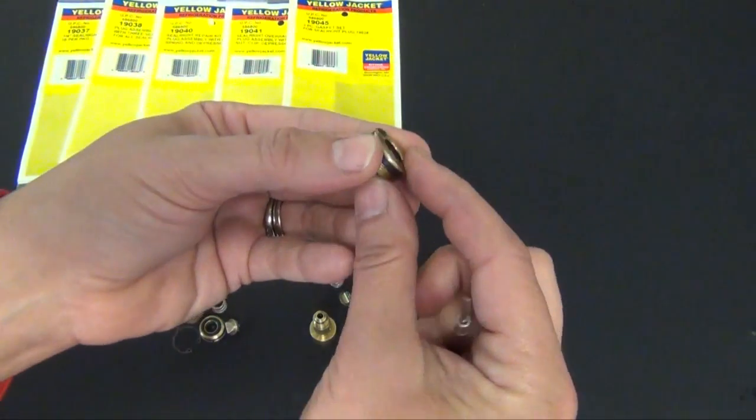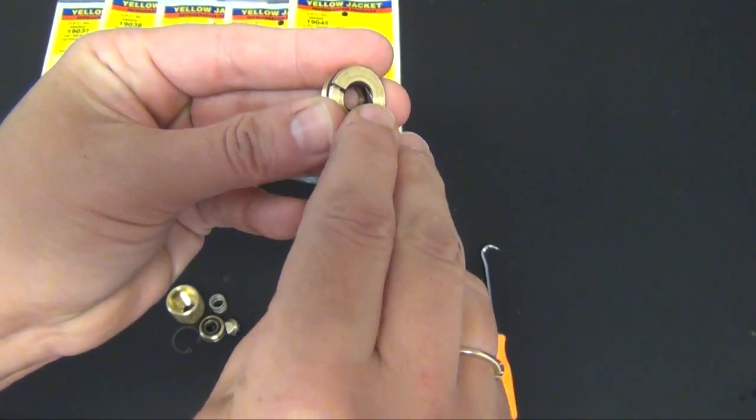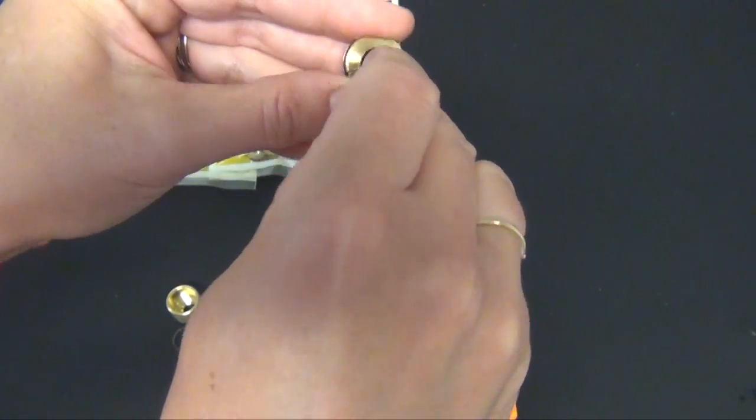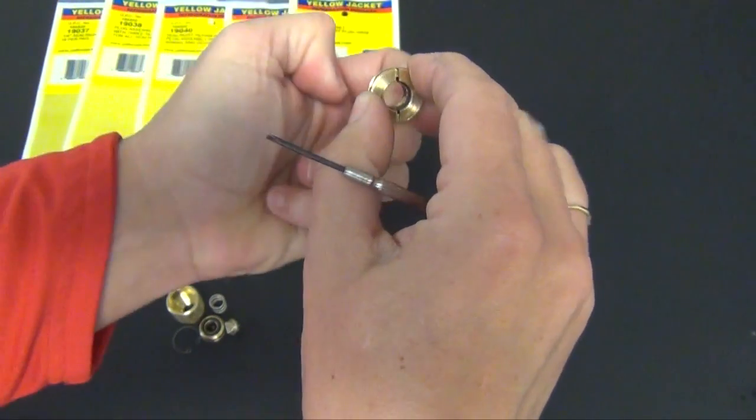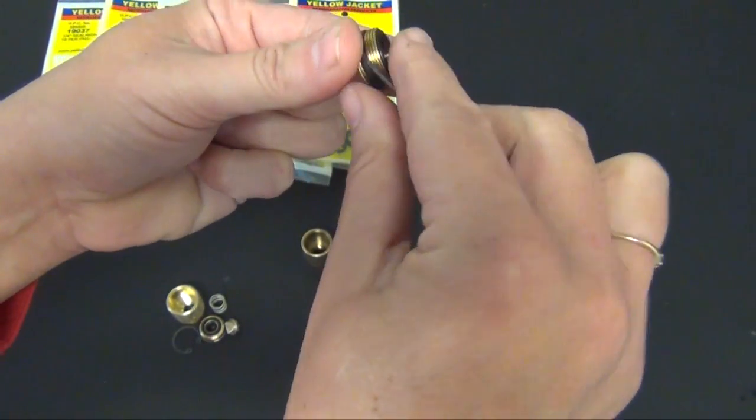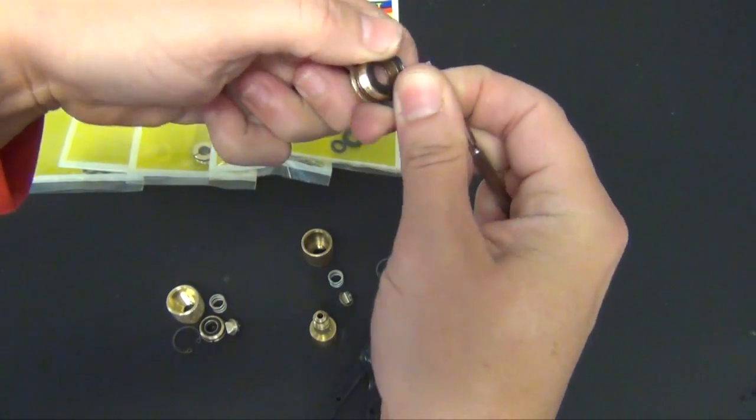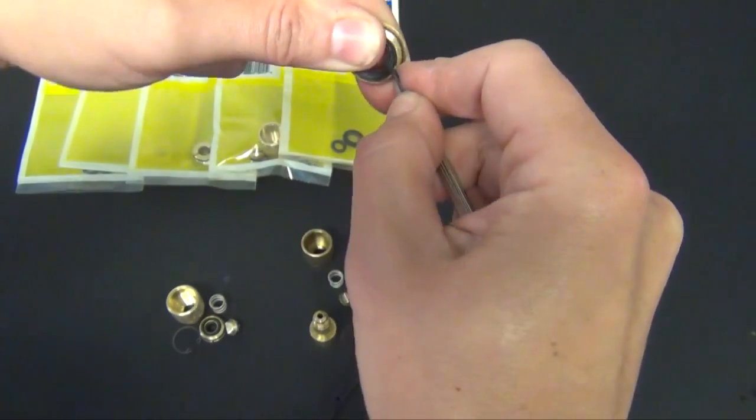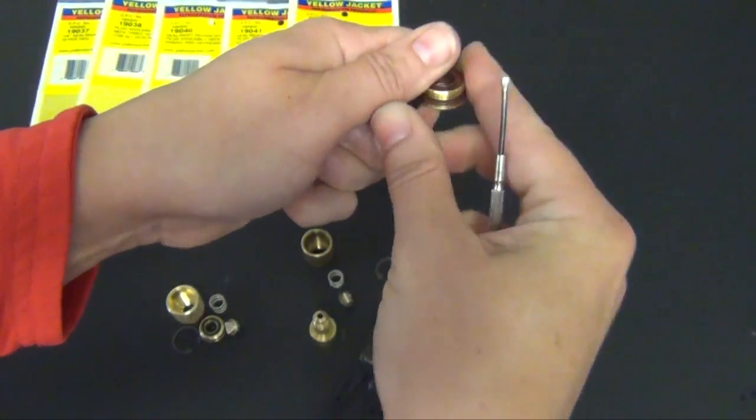If you got the O-ring and the gasket kit you could go ahead and at this time remove the O-ring and the gaskets.